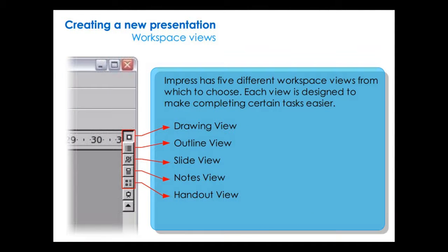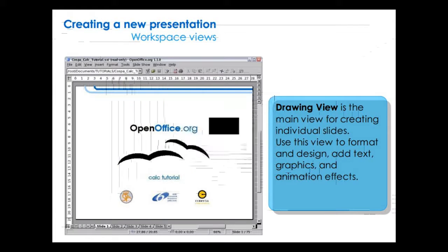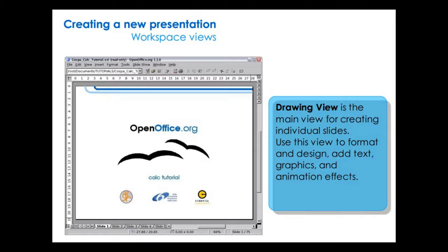Impress has five different workspace views from which to choose. Each view is designated to make completing certain tasks easier. These are the Drawing view, Outline view, Slide view, Notes view, and the Handout view. Drawing view is the main view for creating individual slides. Use this view to format and design, add text, graphics, and animation effects.